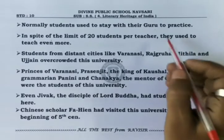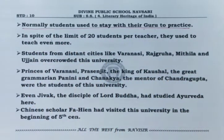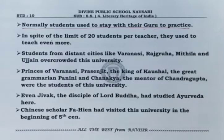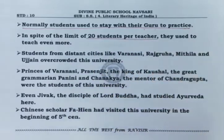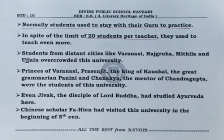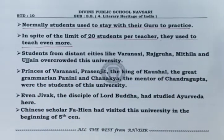Normally, students used to stay with their guru for practice. Most students used to live in hostels or monasteries in the company of their guru, similar to the Gurukul system. In spite of the limit of 20 students per teacher, they used to teach even more students — so there were more than 20 students per teacher in practice.